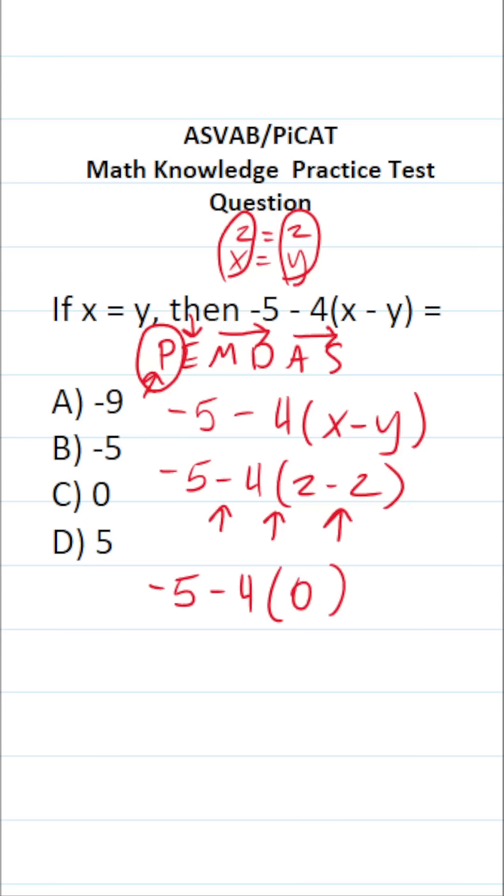We only have two operations left: subtraction, -5 minus 4, and multiplication, -4 times 0. Anything times zero is zero, so -4 times 0 is 0.